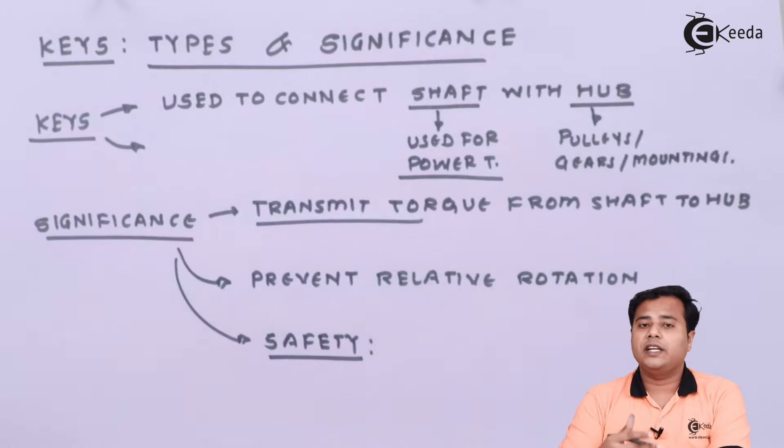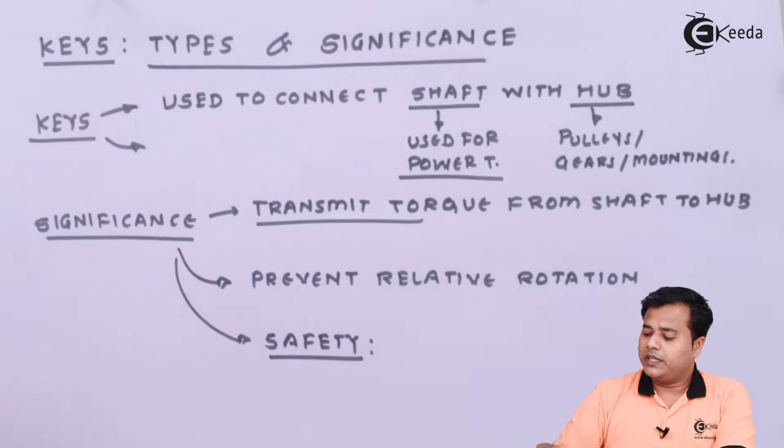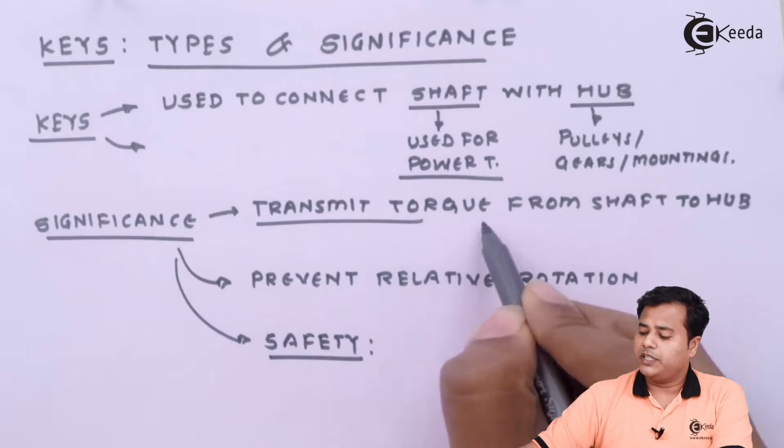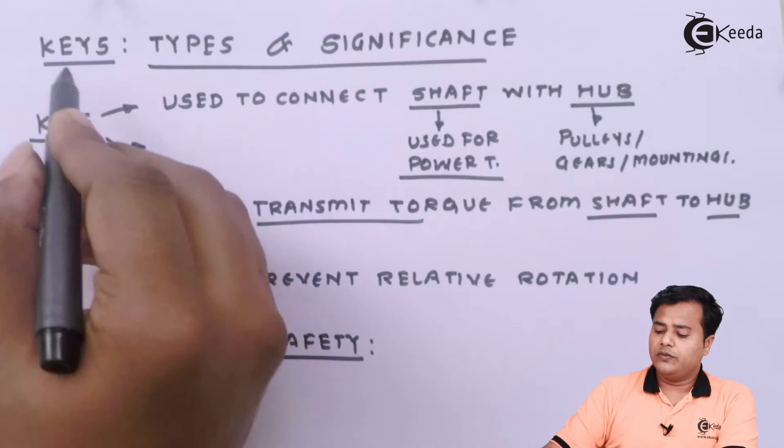Mounting can be gear, it can be pulley, and further that torque will be transmitted ahead with the help of belt and other mechanisms. But it is important to transmit the torque from shaft to the hub and that is done using keys.